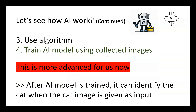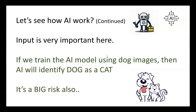The third step is to use the algorithm — the instructions you provide to the computer. The fourth step is to train the AI model using the collected images. This is more advanced for now, so we will consider the AI model is trained and it can identify the cat when a cat image is given as input. The input you provide is very important — if you train the AI model using dog images, then AI will definitely identify a dog as a cat. That would become a very big risk.